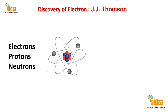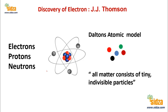But before this concept, before these fundamental particles were discovered, it was John Dalton who actually in 1808 put forward a theory called Dalton's atomic model or atomic theory. According to this concept, all matter that we see around us consists of very small, tiny particles which are indivisible — meaning you cannot break them further. So according to Dalton's atomic model, matter consists of small indivisible particles.